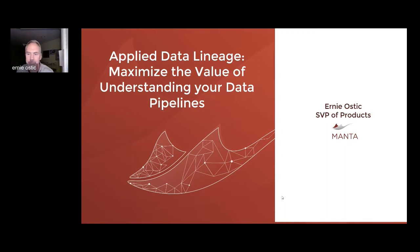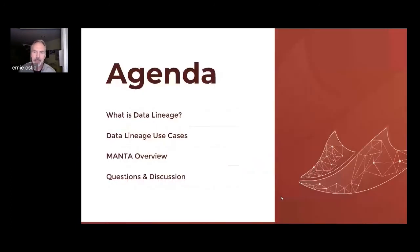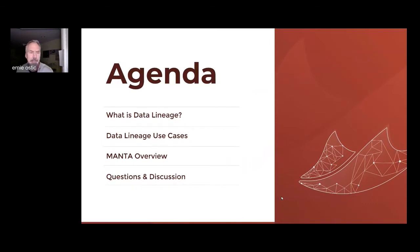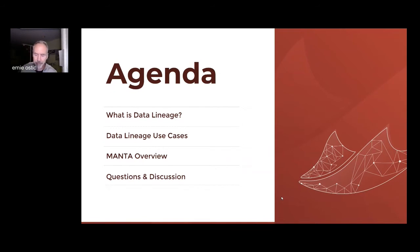Agenda: we'll quickly talk about what lineage is, just to level-set everybody here in the audience and define it a little bit better. We'll talk about how hard it can be to achieve lineage. We'll look specifically at some data lineage use cases — where is data lineage being most effective in looking at your pipelines? And then I'll close with a brief overview of what we do at Manta to help you with your lineage challenges.